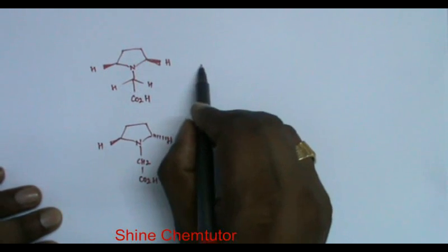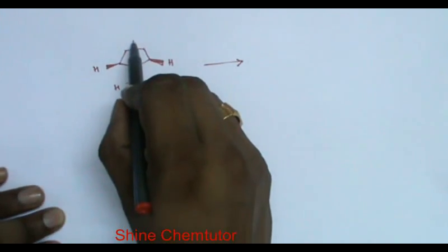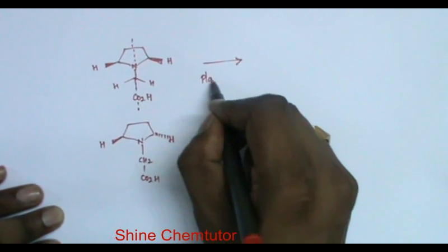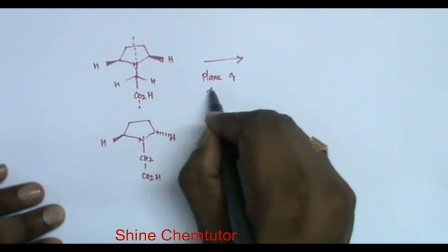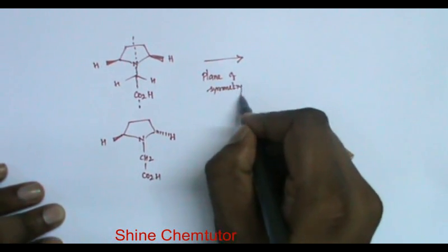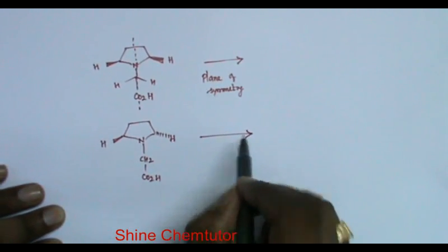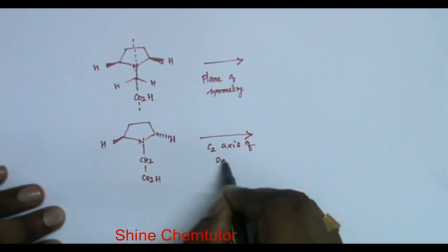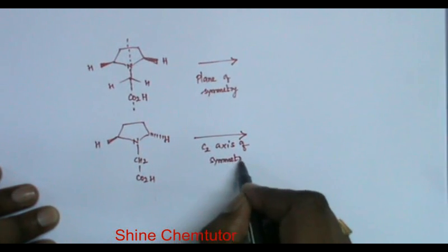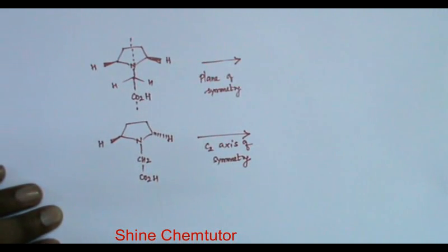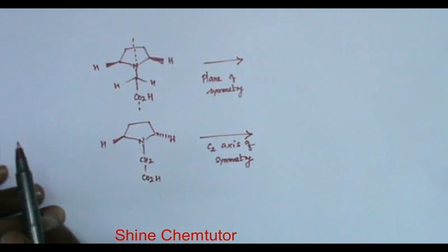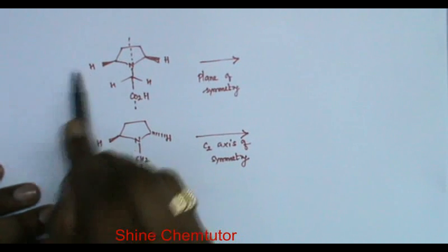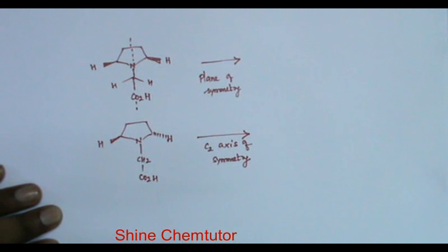If you look at this structure, this molecule has a plane of symmetry. This molecule has a C2 axis of symmetry. If I keep the mirror plane here, this hydrogen will get shifted here. This hydrogen will be in this position. So that is basically the plane of symmetry.